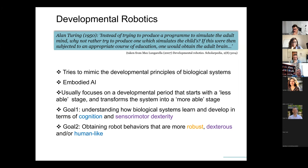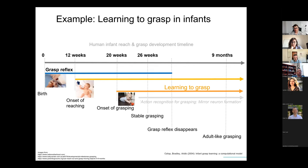The system is constrained by biological systems — based on neuroscientific or behavioral knowledge. The goal is usually twofold: you want to understand how biological systems learn and develop, contributing to neuroscience or cognitive science, or in the opposite direction, you want to obtain robot behaviors that are more robust, dexterous, or human-like. I'd like to give an example within the framework of mirror neurons, which are really related to grasping.